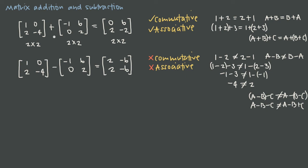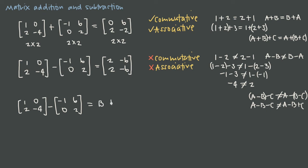Now that we know about matrix addition and subtraction, we can solve equations with matrices in the same way we'd solve equations with real numbers. So let's say I have the matrix 1, 0, 2, negative 4, and I subtract from it negative 1, 6, 0, 2, and set that equal to some unknown matrix B, plus 1, 5, negative 2, 3, plus another matrix 7, 0, 1, negative 2. I can actually solve this for matrix B. This equation is defined because the dimensions of all four matrices are the same.